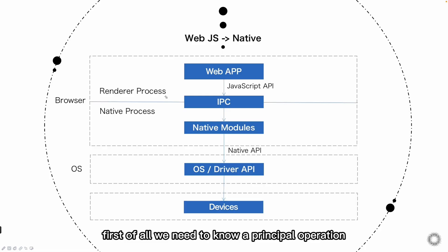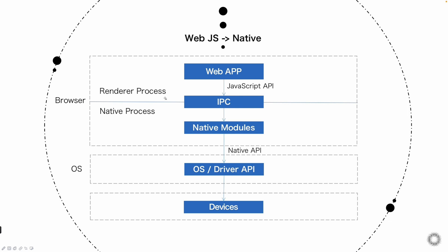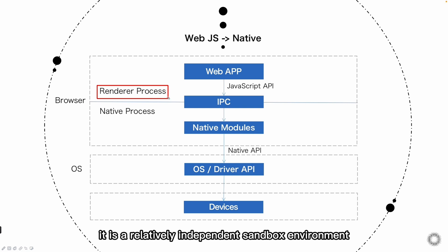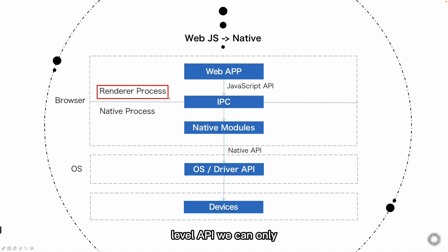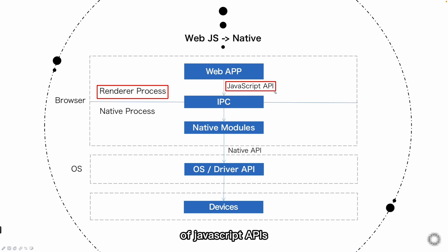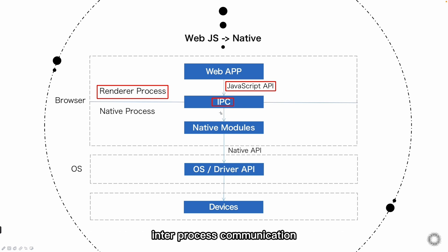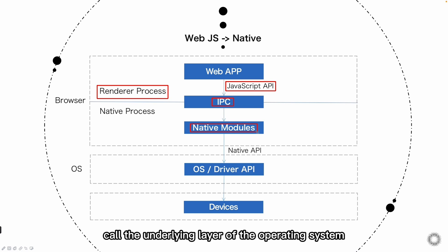First of all, we need to know the principle of JS to native operation on the web. Given a web page in the browser assigned to an independent rendering process, it is a relatively independent sandbox environment. The web itself does not have the right or ability to directly use system-level APIs. We can only communicate with the browser through a series of JavaScript APIs, and then the browser will pass the JS command to the native module of an independent process through inter-process communication, i.e. IPC. Then the native module can actually access the underlying layer of the operating system and APIs of the devices,